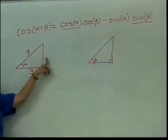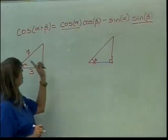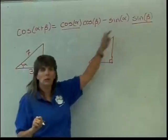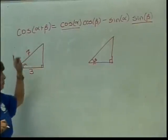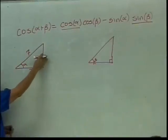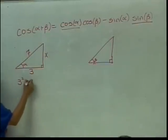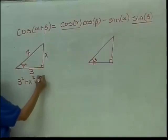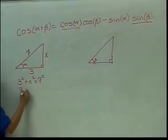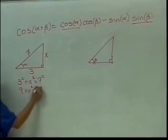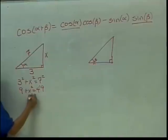I have to find this side, obviously, because I'm going to need the sine of alpha, so I'll need the opposite side over the hypotenuse. So let's mess with this triangle first. What do you want to call that side? X? Okay. So I have 3 squared plus X squared equals 7 squared. That gives me 9 plus X squared equals 49. So X squared equals 40. So X equals